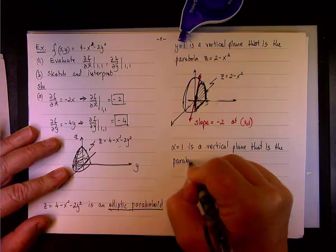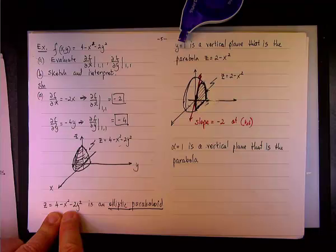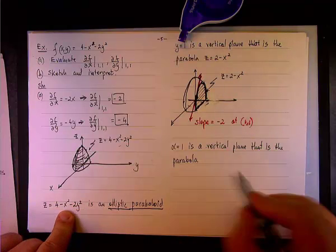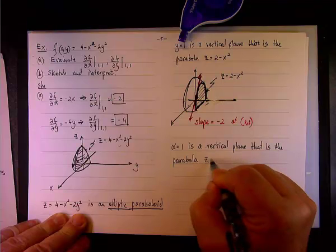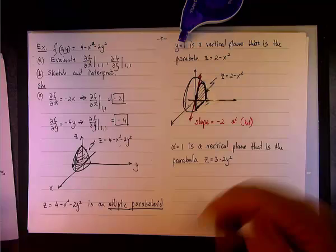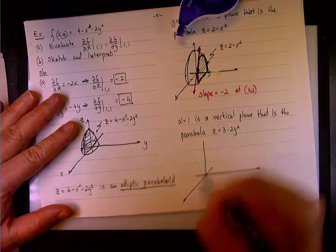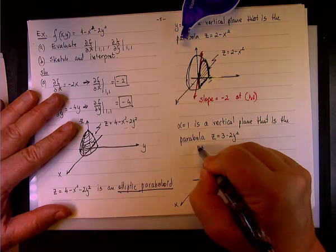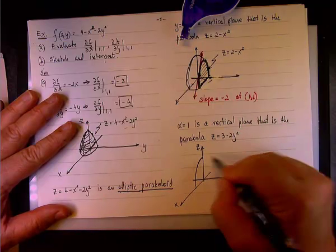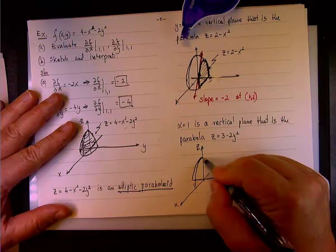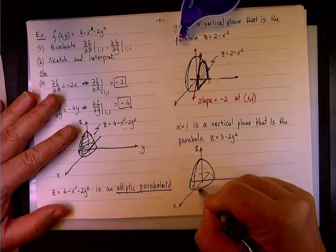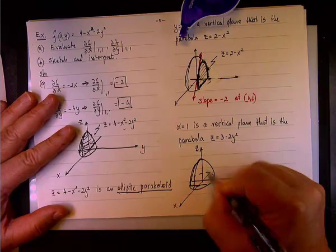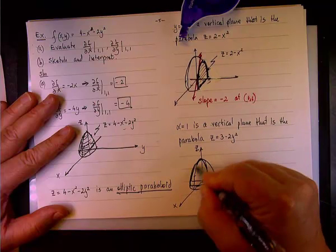And now, the same thing, x equals 1 is a vertical plane that is the parabola. Okay, what happened when x equals 1? Well, z equals 4 minus 1 minus 2y squared, or 3 minus 2y squared, right? All right, so let me, one more challenge, let me try to sketch it. I better, I'll do the same thing. I'm going to sketch the whole paraboloid, and then I'll erase what doesn't apply, okay?